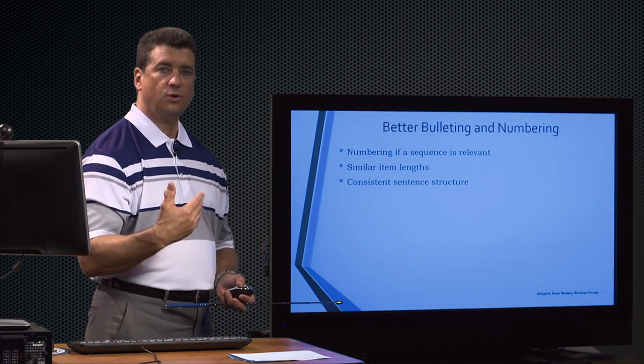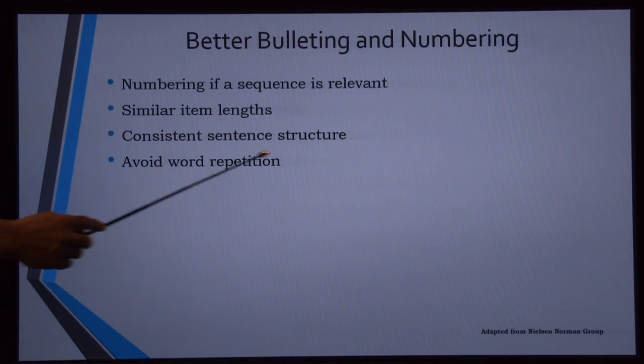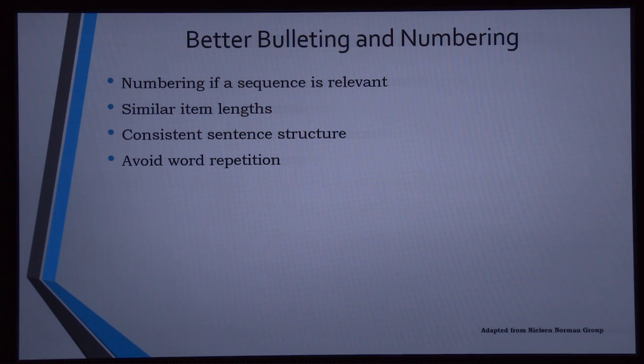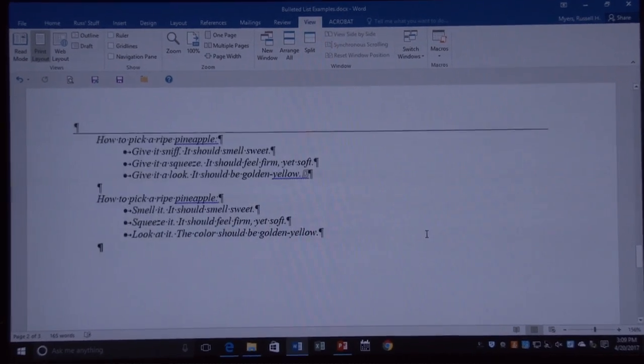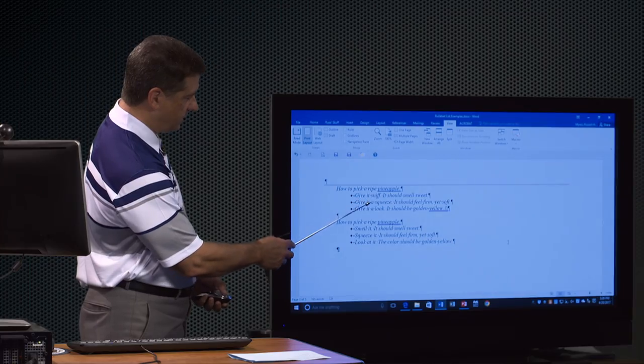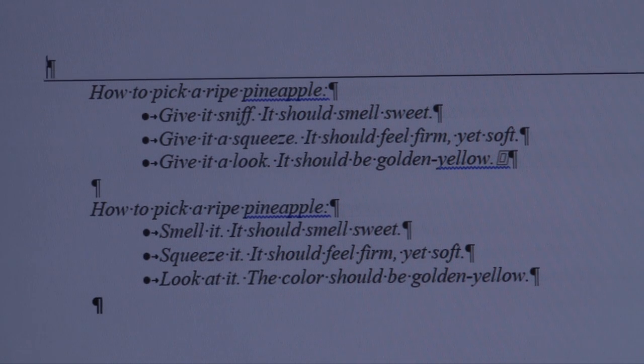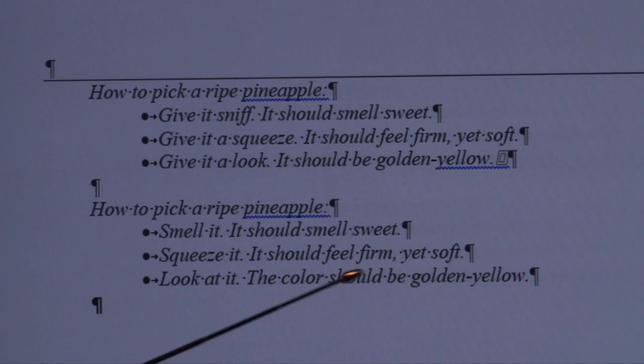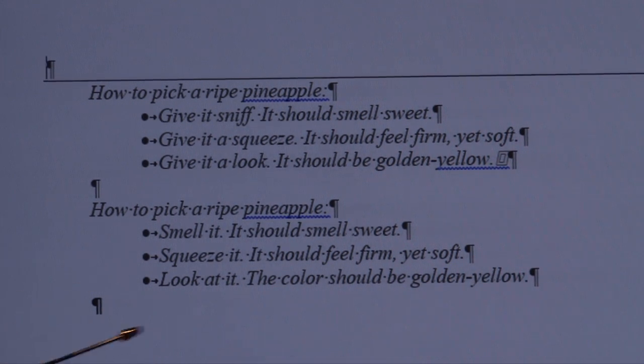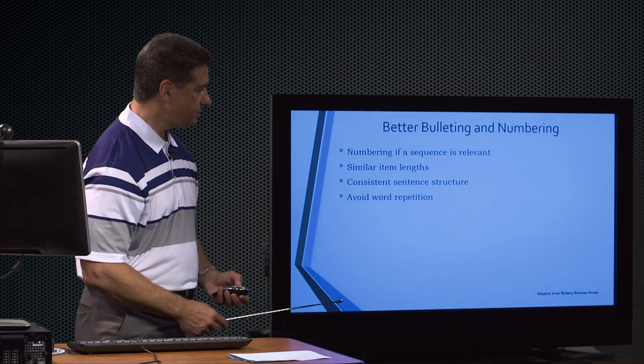This is a real bad one that I've seen lots of people do. Avoiding the same word over and over and over and over again. So here they're talking about they're going to pick some pineapples and here's how you do it. They say, give it, give it, give it. Well, we don't need that word give. We're going to smell it. We're going to squeeze it. Whatever we have to do. I even think on some of these sentences we could even cut it down more. So it says, look at it. The color should be golden brown. I would say, look at it, golden yellow color. Not those full sentences, keeping it as simple as possible and anything that's self-explanatory we don't have to put in.